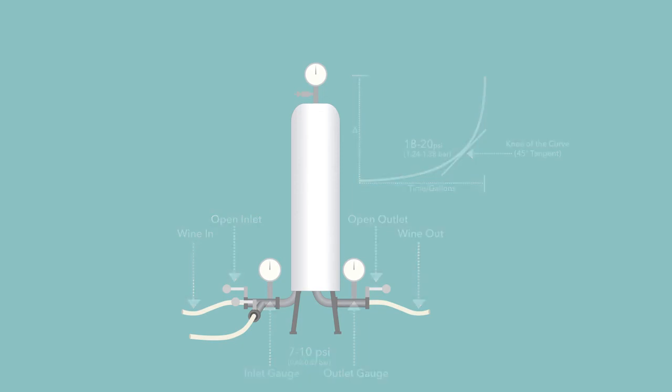Once filtration is complete, close product outlet valve. Pressure should be released slowly from the system and residual liquid drained. Post rinse of the filter can be achieved by introducing a forward flow of water, closing inlet and outlet valves, and opening inlet water valve and discharge valve.